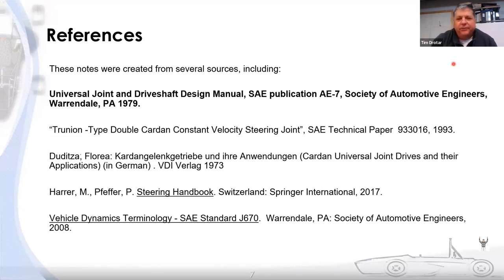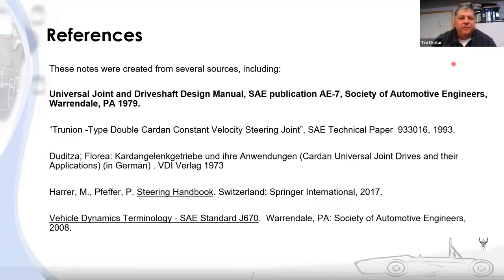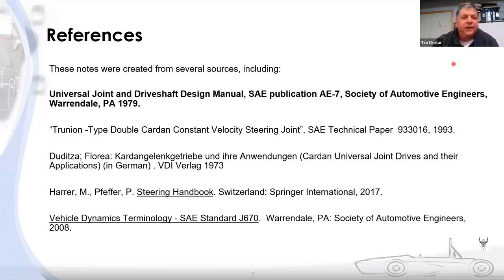There are also a couple of SAE papers. The third one down is really good — unfortunately it's in German, but it's called 'Cardan and Universal Joint Drives in Their Applications.' The Pfeffer and Harrer Steering Handbook, translated into English in 2017, is another really good resource. And as always, SAE J670, the Vehicle Dynamics Terminology standard, is a really good reference. When we're talking about vehicle dynamics and chassis systems, we should be properly applying the terminology specified in that standard.